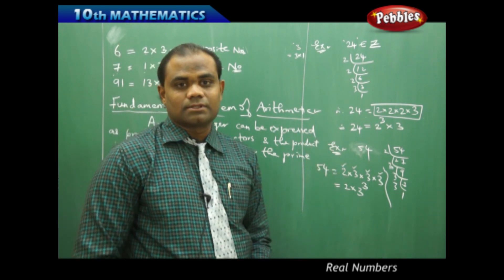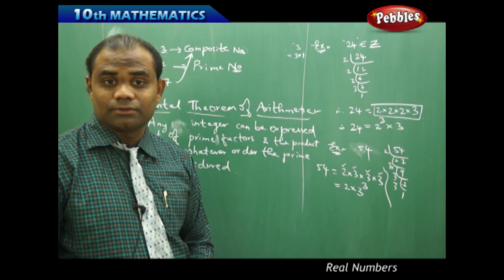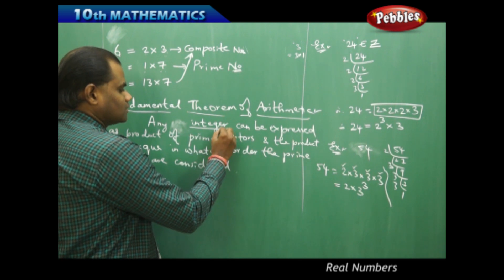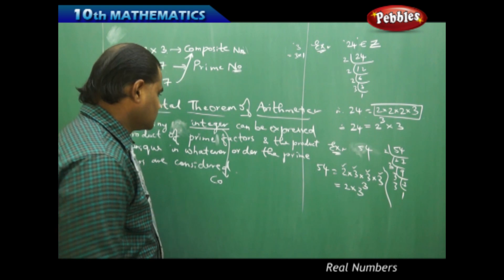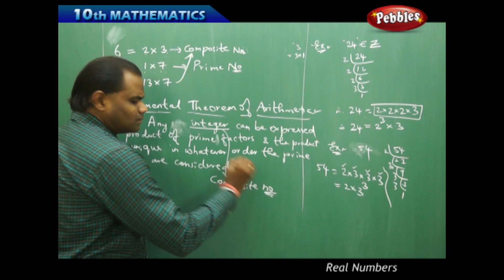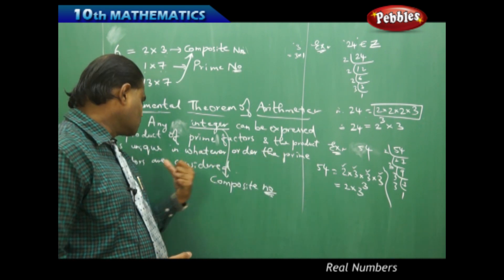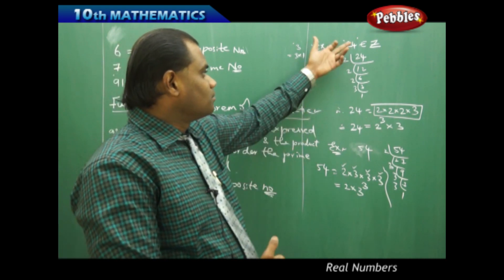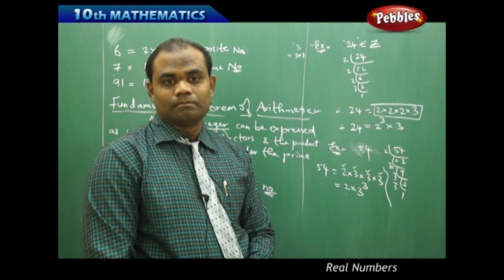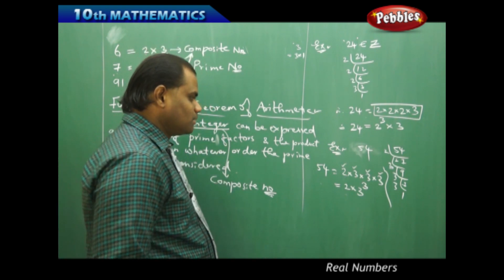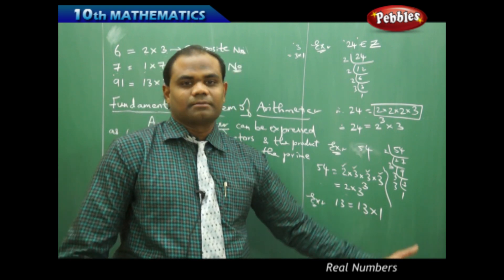These two examples conclude that any integer can be expressed as a product of prime factors and the product is unique. Some mathematicians replace the word 'integer' with 'composite number,' because expressing a number as a product of factors is closely connected to the definition of a composite number. So the statement can be re-read as: any composite number can be expressed as a product of prime factors and the product is unique in whatever order the prime factors are considered. For example, 24 is a composite number expressed as 2 cubed times 3, and 54 is a composite number expressed as 2 times 3 cubed. This can also apply to a prime number — 13 is expressed as 13 times 1, expressed as a product of primes 1 and itself.